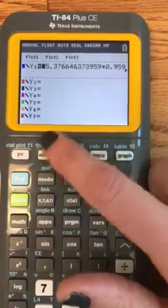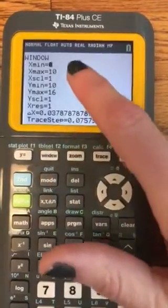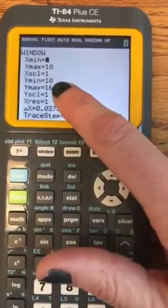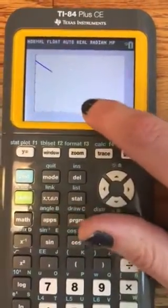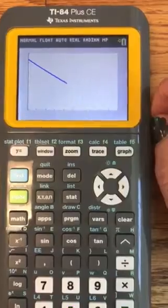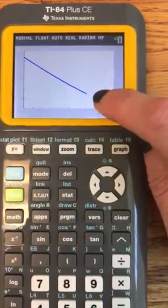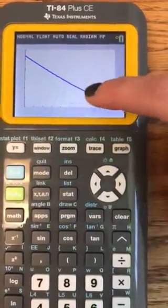And then I've already set my window for the data that I have. And you can just hit graph, and it will graph the exponential equation. Now this particular one doesn't look very curved. You can kind of see it's sort of bending.